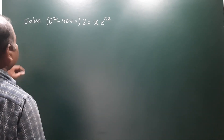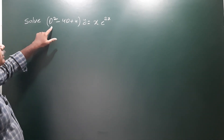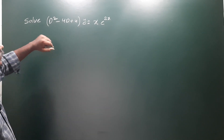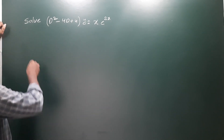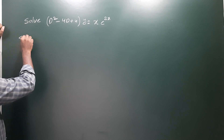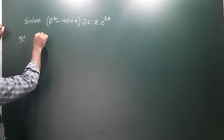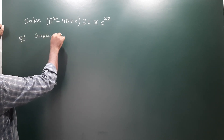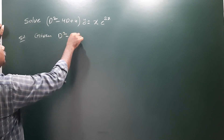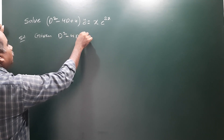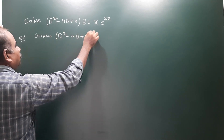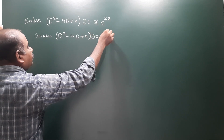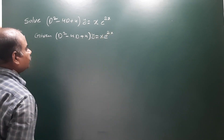Next problem: solve (D² - 4D + 4)y = x·e^(2x). Let us see the solution. First of all, write the given equation: D² - 4D + 4 into y is equal to x into e power 2x.